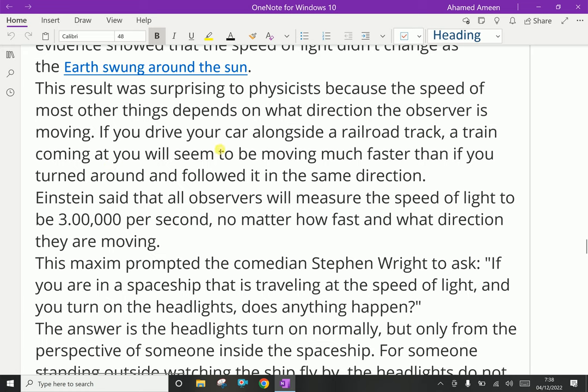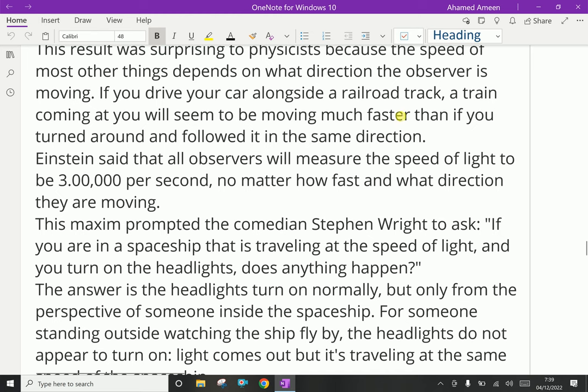If you drive your car alongside a railroad track, a train coming at you will seem to be moving much faster than if you turned around and followed it in the same direction. Einstein said that all observers will measure the speed of light to be 3 lakhs kilometer per second, no matter how fast and what direction they are moving.